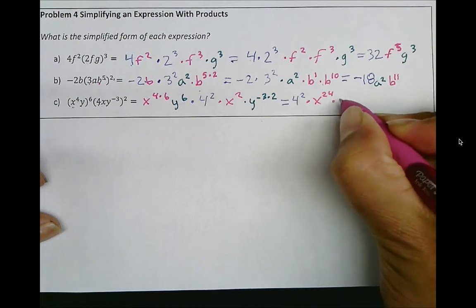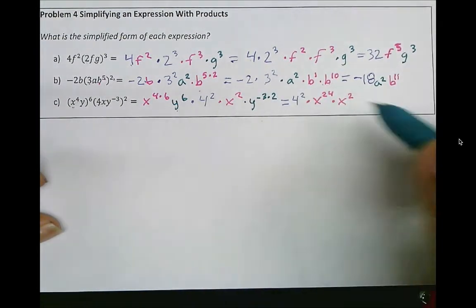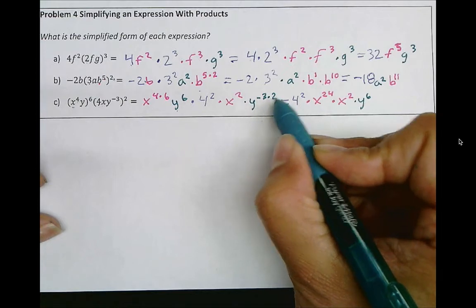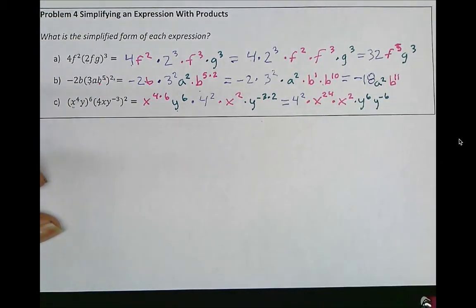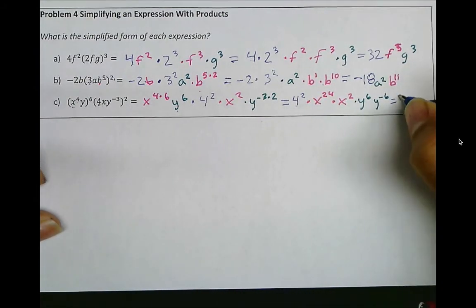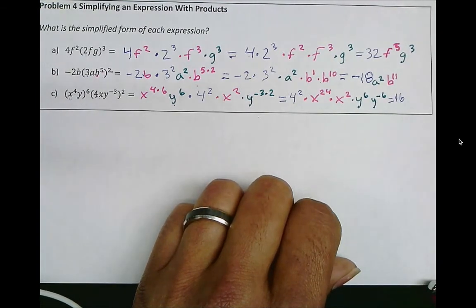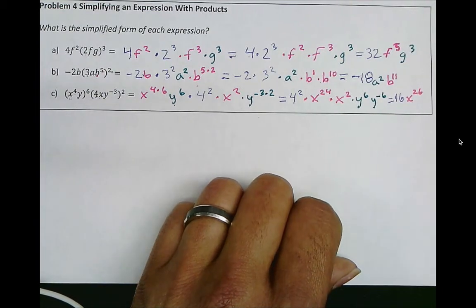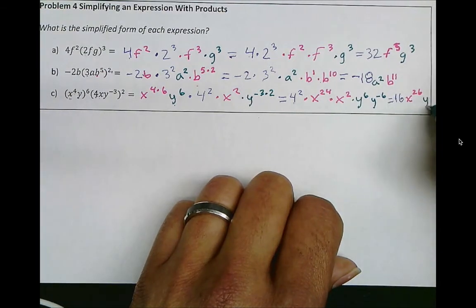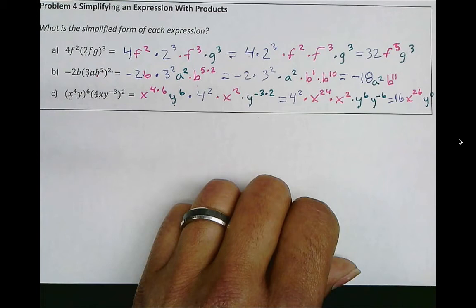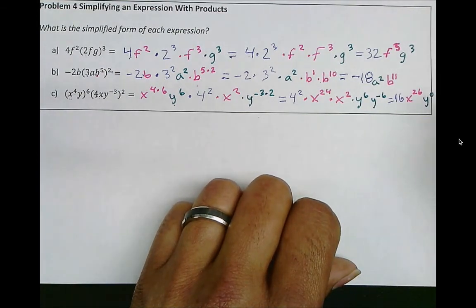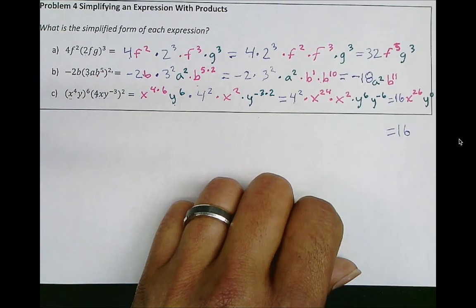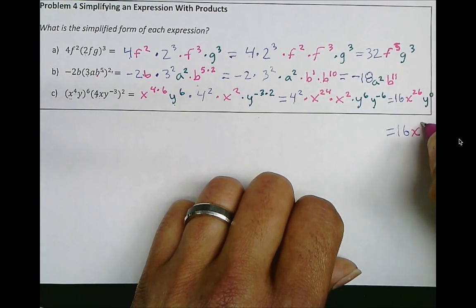And next, we'll bring over the x to the power of 2. Let's bring over this y to the power of 6, and bring over the y to the power of negative 3 times 2, which is y to the power of negative 6. 4 to the power of 2 is 16. x to the 24th times x squared is x to the 26th. And y to the 6th times y to the negative 6 is y to the power of 0. We can simplify this further, recalling that anything raised to the power of 0 is equal to 1, and multiplying by 1 just keeps everything else as it is. So this simplifies down to 16x to the power of 26.